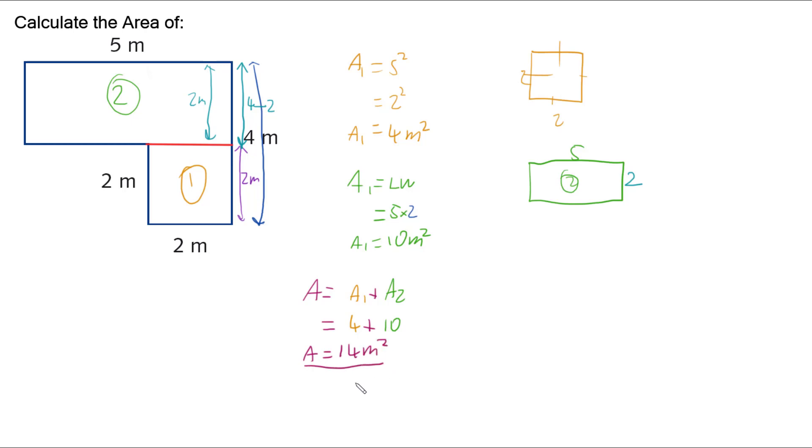And we're done. So if we've got a shape that we can break up into other shapes, you work out the individual areas first, and then you either add or subtract to get your final answer. We'll see you next time.